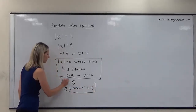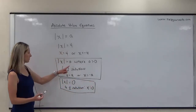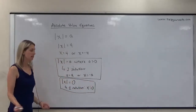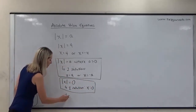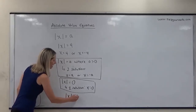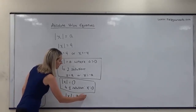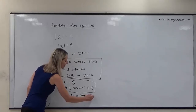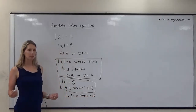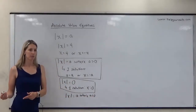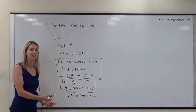Lastly, that leaves us with the negative case. What happens when the absolute value equals a, where a is less than zero? Since absolute value is always non-negative, it is a contradiction to say it equals something negative.